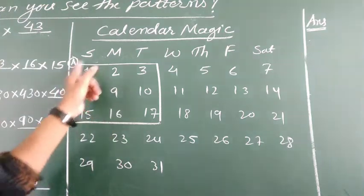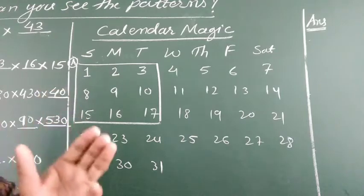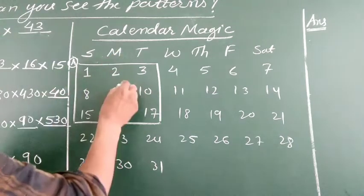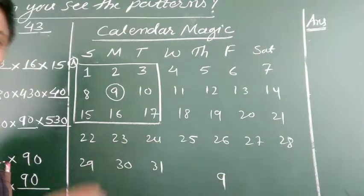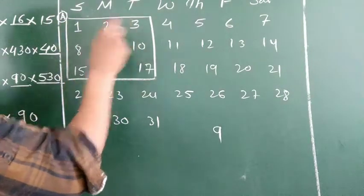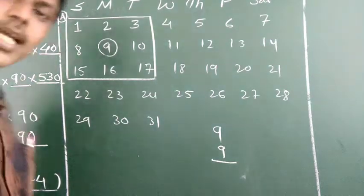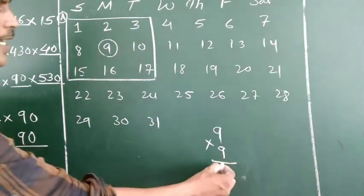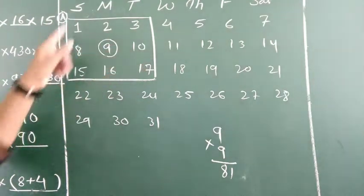So what we have to do: we take the middle number, which is 9, and then how many numbers are there in this square — 9 numbers are there. Now multiply: 9 into 9 equals 81. So the sum of all these 9 numbers is equal to 81. The sum of all these 9 numbers in square A is 81.